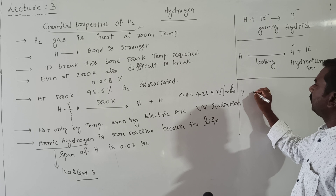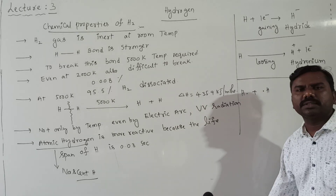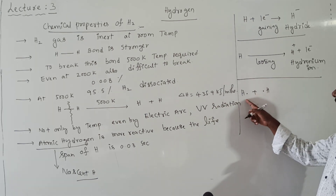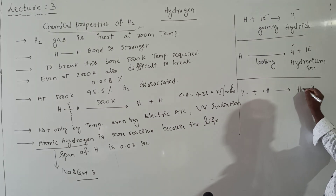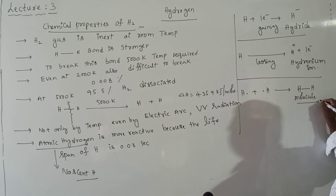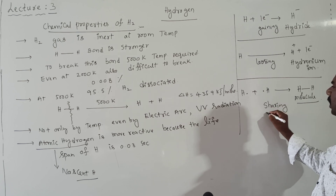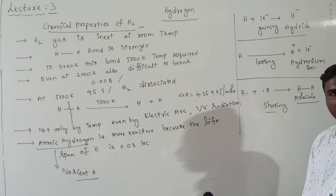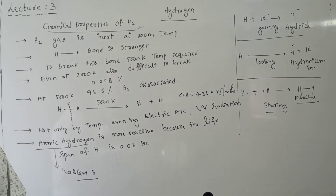If hydrogen shares one electron — its electronic configuration is 1s¹, only one electron — then it forms hydrogen molecules. So the three phenomena are: sharing, gaining, and losing. These are very, very important. We will now discuss a few chemical properties.